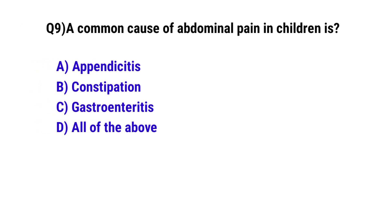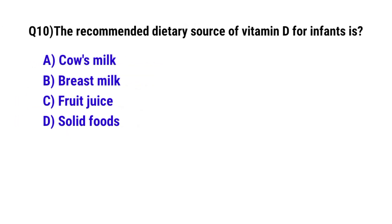Question 9: A common cause of abdominal pain in children is — the correct option is D: All of the above. Question 10: The recommended dietary source of vitamin D for infants is — the correct option is B: Breast milk.